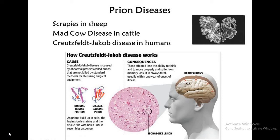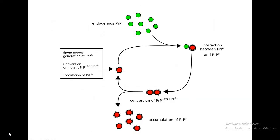Scrapie is caused by an abnormal form of a cellular protein. The abnormal form is PRPSC, or scrapie-associated prion protein.